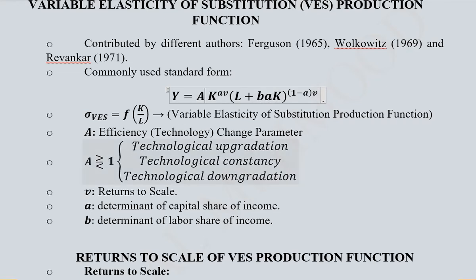If A is less than 1, there is technological downgradation, meaning the same capital and labor will not be able to produce the same amount of output.